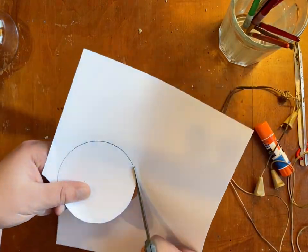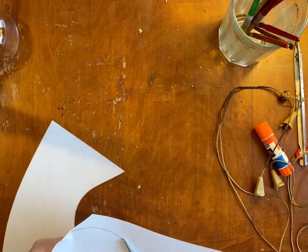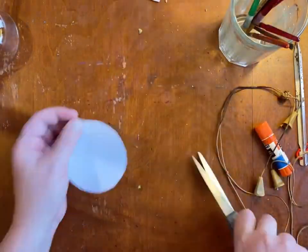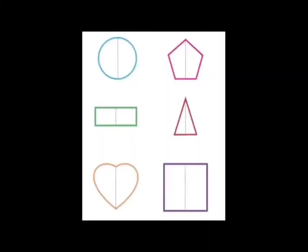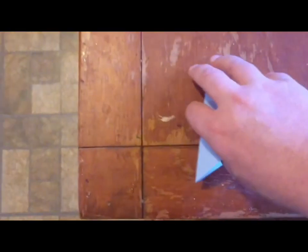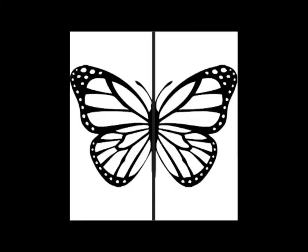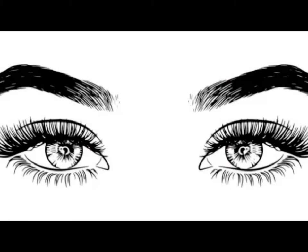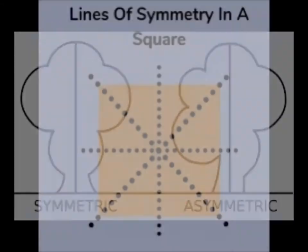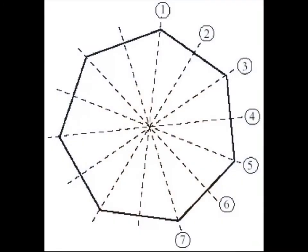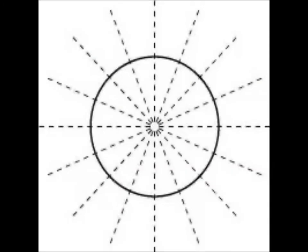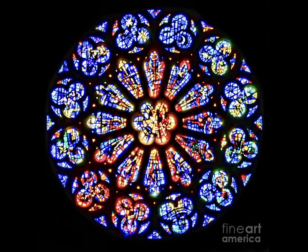Rose windows were generally symmetrical and we are gonna make our rose windows symmetrical too. All of these shapes are symmetrical — if I folded them in half the halves would match up, kind of like a symmetrical heart. Anytime you fold something and it matches up perfectly on both sides, it is symmetrical. If something isn't symmetrical it's called asymmetrical. If I can fold a shape in half in more than one way, those are called lines of symmetry. Rose windows are like that.